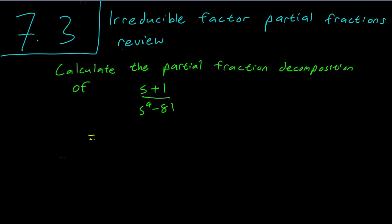So we have this partial fraction and again we have to factor the denominator as a first step. This is the difference of squares, so this is s squared plus 9 times s squared minus 9. Remember that often we will have to use the quadratic formula or something to factor, but in this case we have another difference of squares.